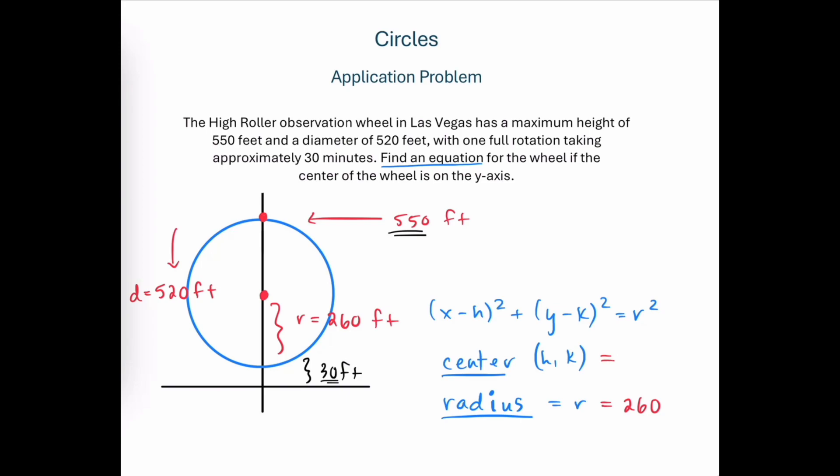In order to determine the coordinates of the center, we'll take the 260 foot radius and add 30 to that to get us down to the x-axis. So the x-coordinate of the center, since we're on the y-axis, is 0, and the y-coordinate of the center is 260 plus 30, or 290. So h, k is (0, 290).